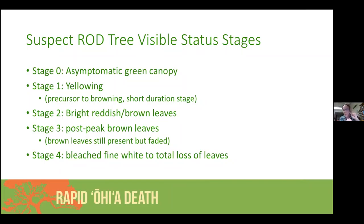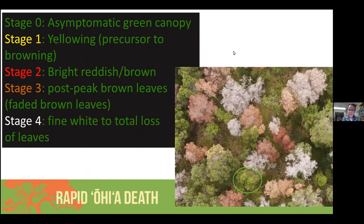I don't have a lot of background on the fungal pathogens itself — I assume this group is somewhat familiar. RAD is just a descriptor for rapid ohia death. What's actually happening is trees are being infected with different fungal pathogens. We can find suspected trees by looking at high-resolution imagery. This is an example from an image collected with a drone, or unoccupied aerial system — which is the preferred term now, replacing 'unmanned.'